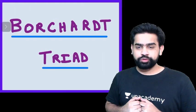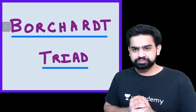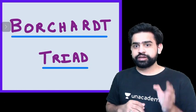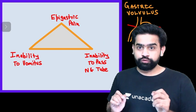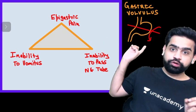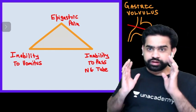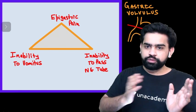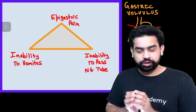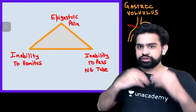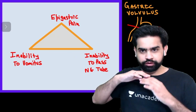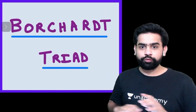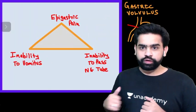Let's move on to the next one: Borchardt's Triad. This is something you get in gastric volvulus. In gastric volvulus, the stomach is rotating on its own axis, so when the patient tries to eat food it cannot go forward, and the patient is vomiting. This gives us Borchardt's Triad.